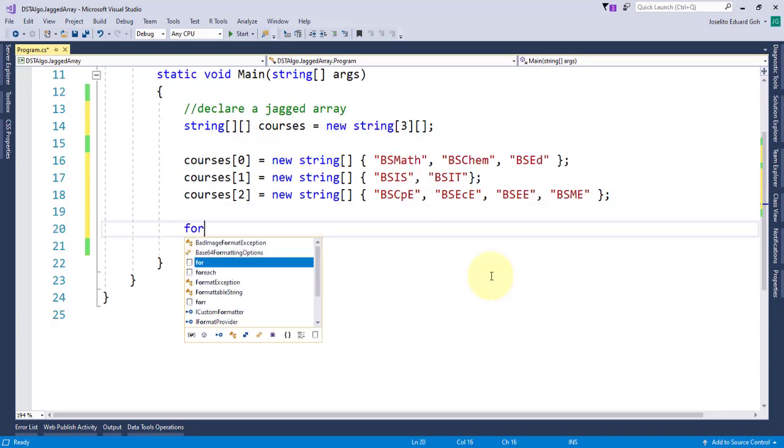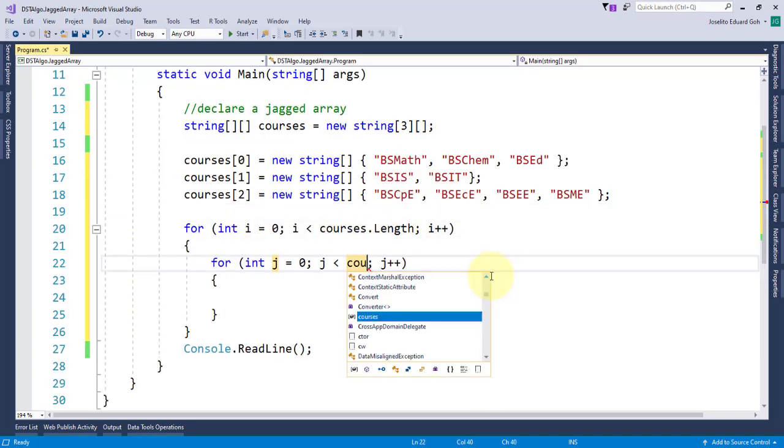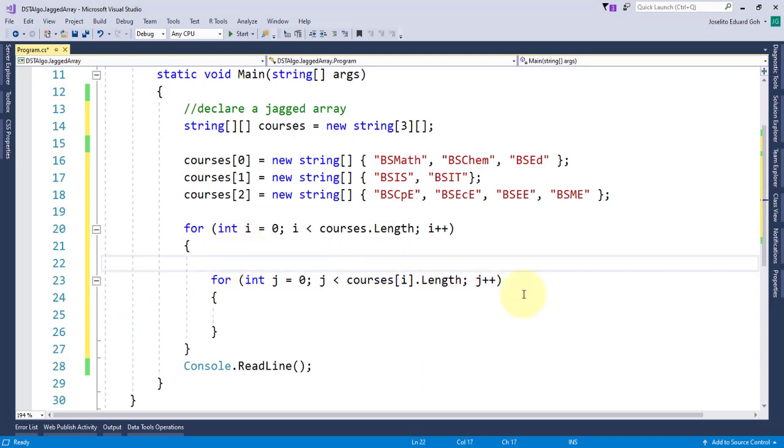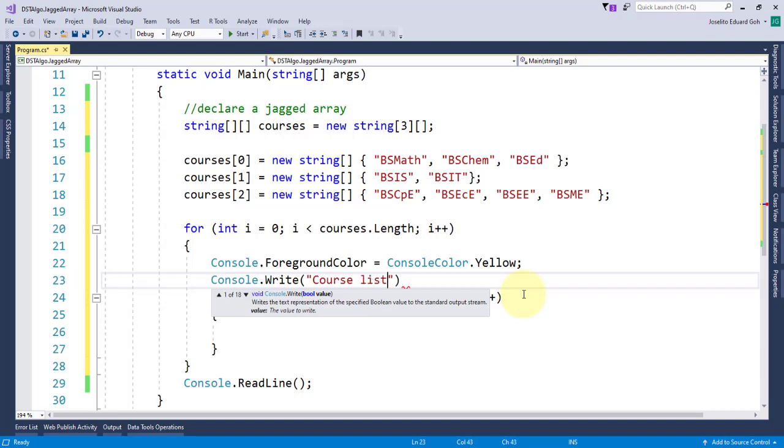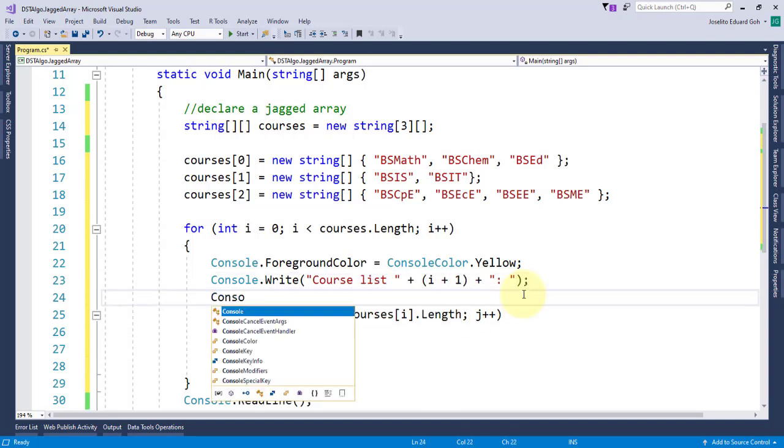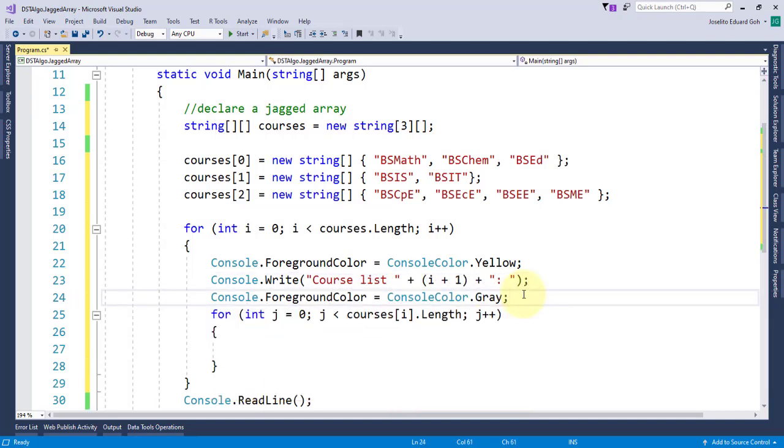Now to traverse through the entire collection of courses, I'll use this nested loop that for every row I'll display a row header course list and then followed by number. And inside the inner loop I'll display all the courses inside this individual reference array and separate each set of courses with the next line.